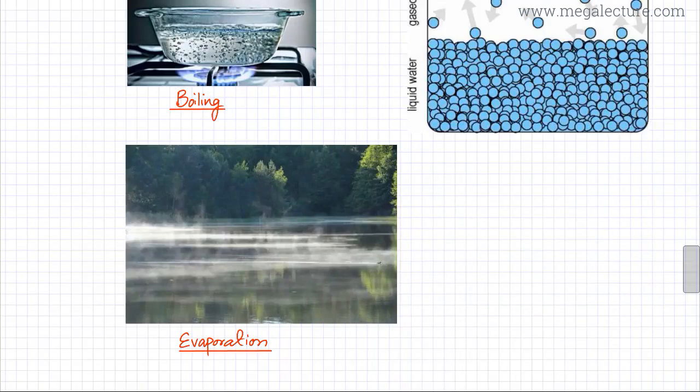You can see evaporation in this image. There's a lake shown and evaporation is only occurring at the surface. You don't see gas molecules forming everywhere, it's only the surface molecules. In this image, the particles at the surface are changing into gaseous state. You can see steam forming, water vapors. The change in state is not occurring throughout the liquid, only at the surface.